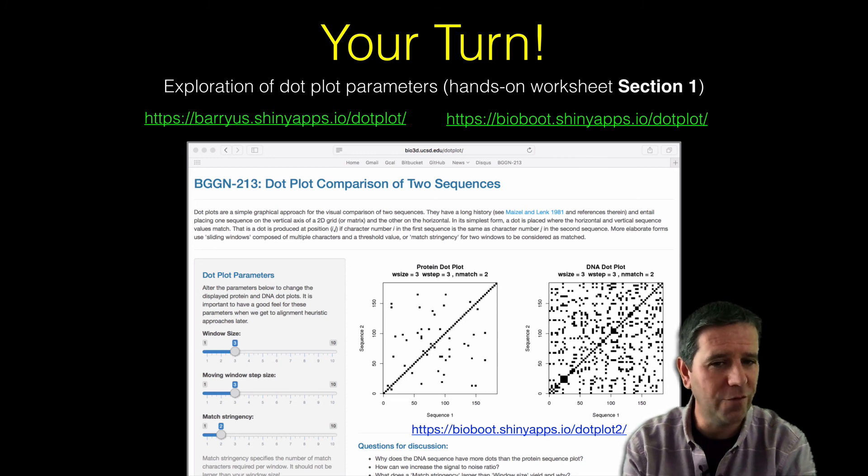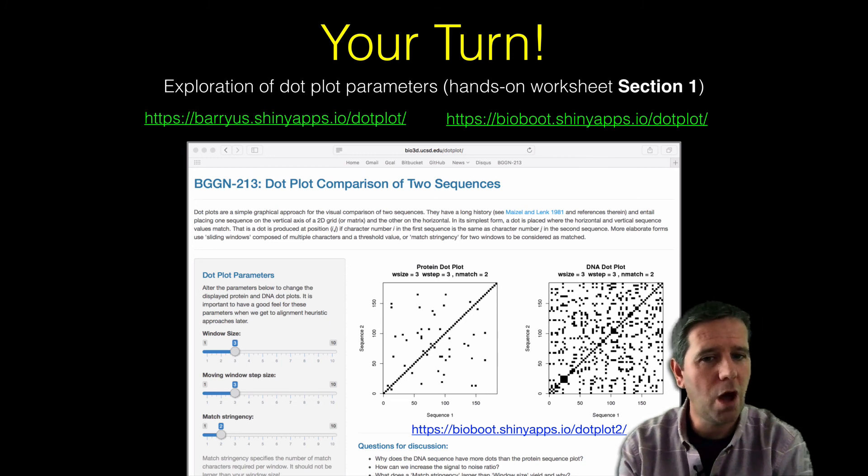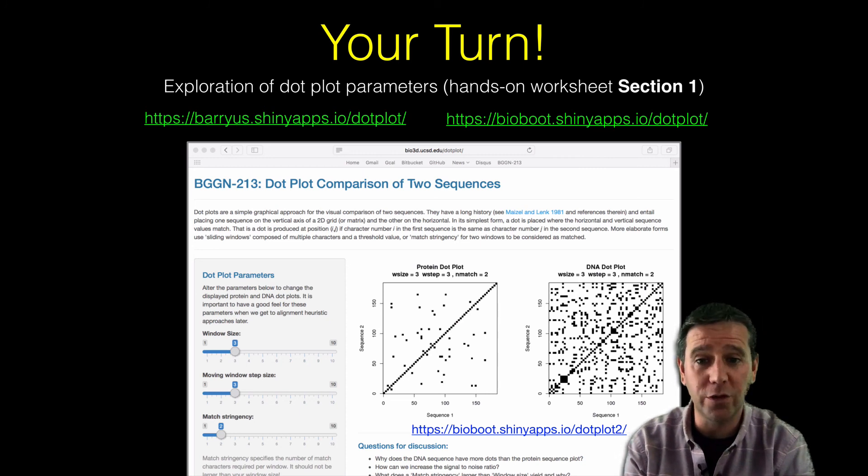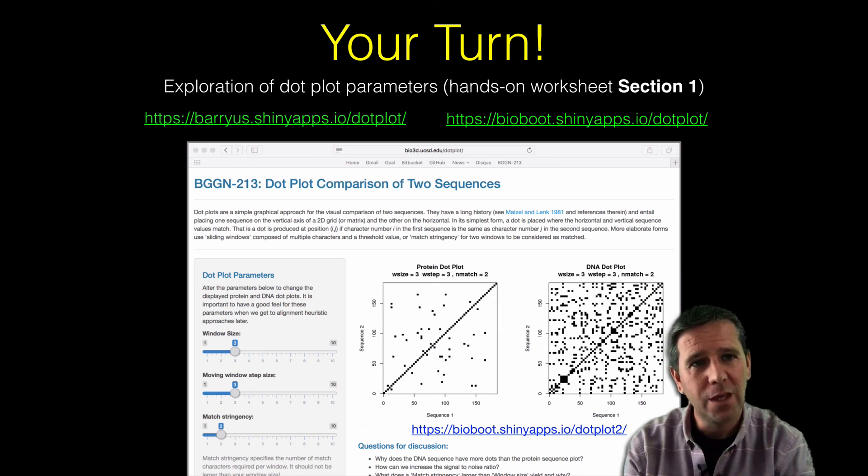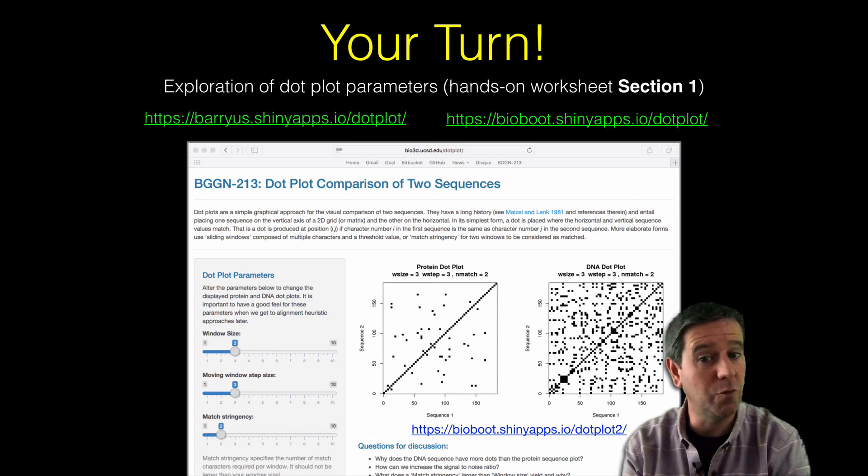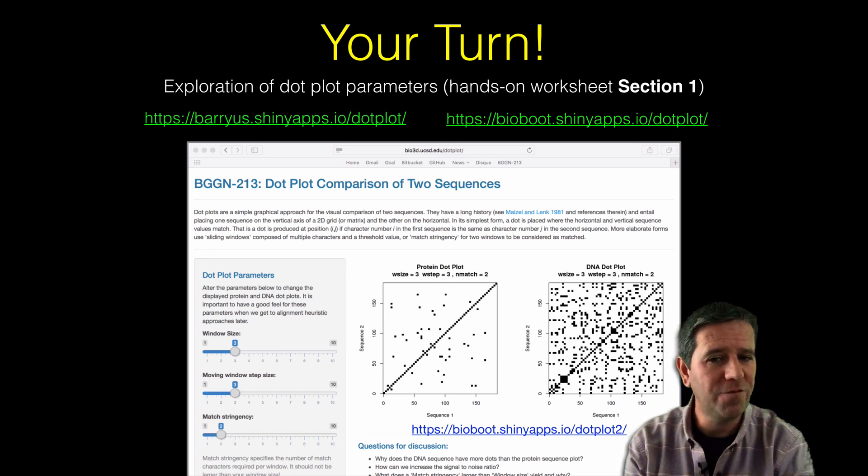And then once you've thought about that for a little bit, how can you reduce the noise in both of these plots? And then what would having a match stringency larger than the window size result in, and why? And then finally,